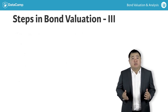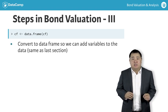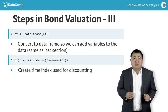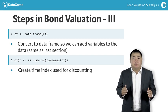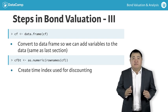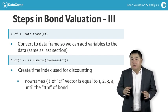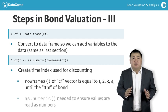The next step is to convert the CF vector into a data frame so we can add variables to the data. This is similar to the step we used in the last section. Next, we create a time index T. To automate this process, we need to find an object that has values equal to 1, 2, 3, 4, etc., until the time to maturity of the bond. Fortunately, the label of the rows of the cash flow vector CF fits this purpose. So using the row names command, we can extract those values and put them into the time index T variable. Then, to ensure that the values are read in as numbers, we use the as.numeric command.